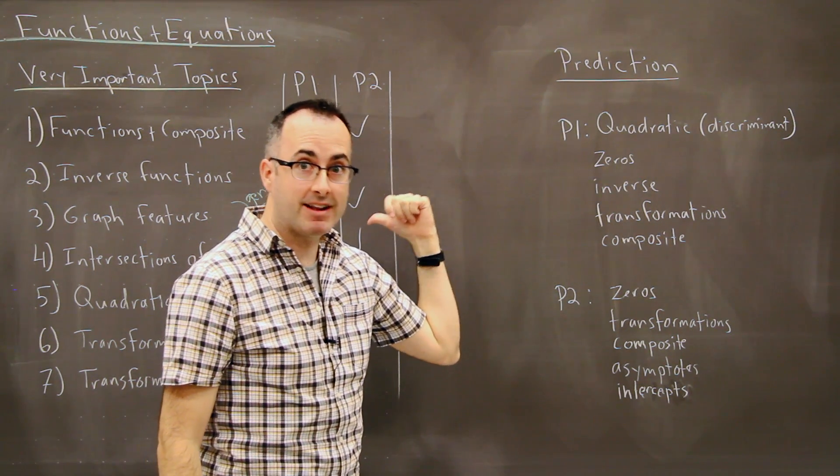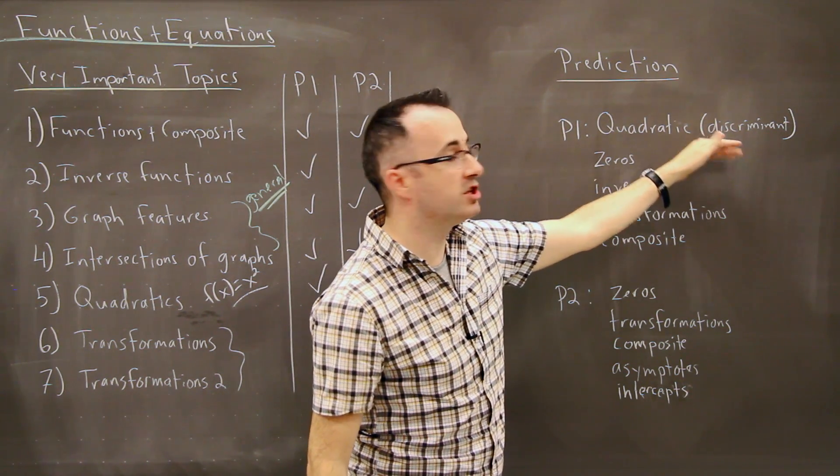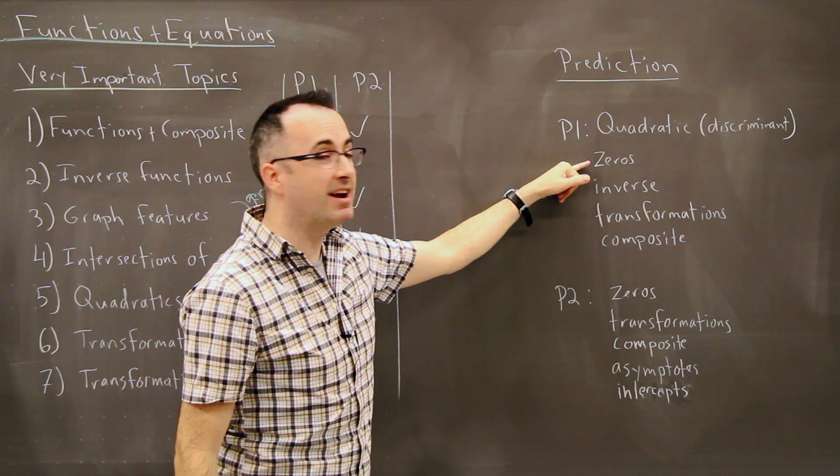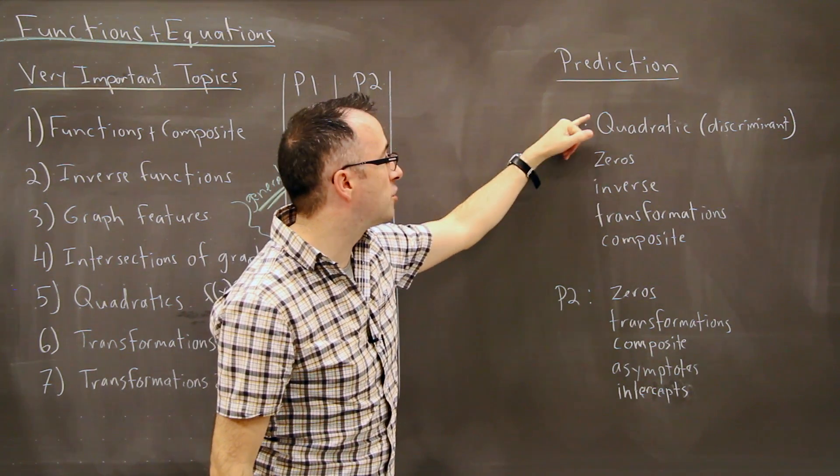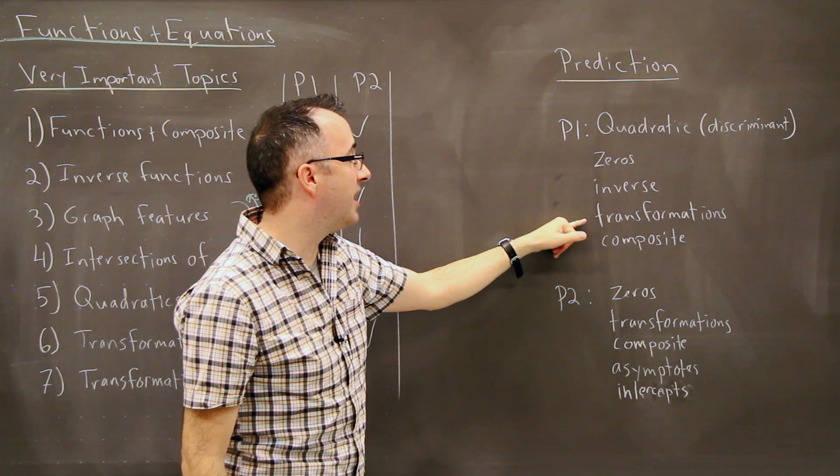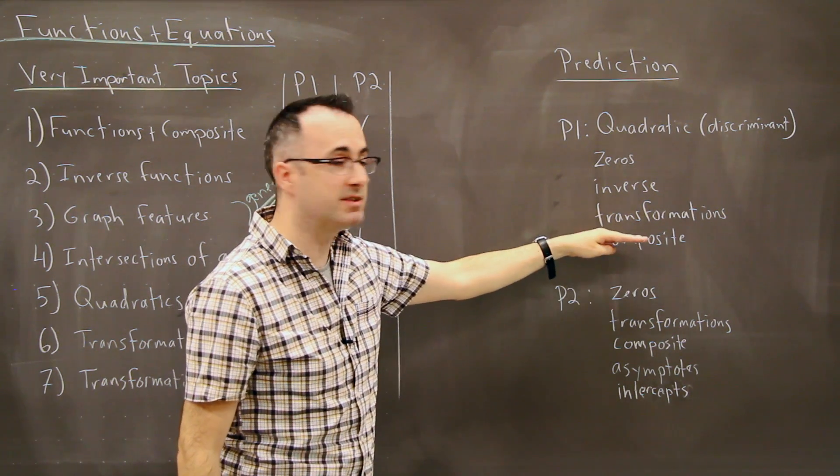In other words, dealing with quadratics, you're finding the zeros of them, and very likely you're going to be having to use a discriminant of some kind. Also, very likely after that, is finding the zeros of any old function, not just quadratics, but any function. Next most likely is doing an inverse. After that comes transformations, so in other words moving things around. Then comes composite functions.